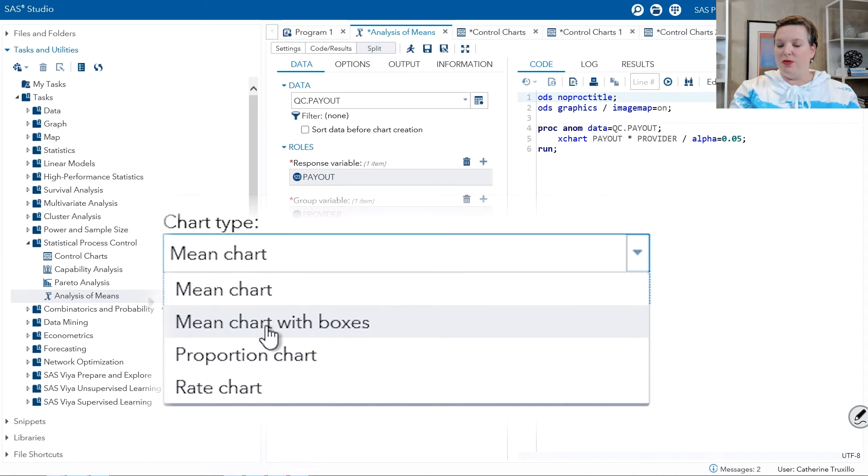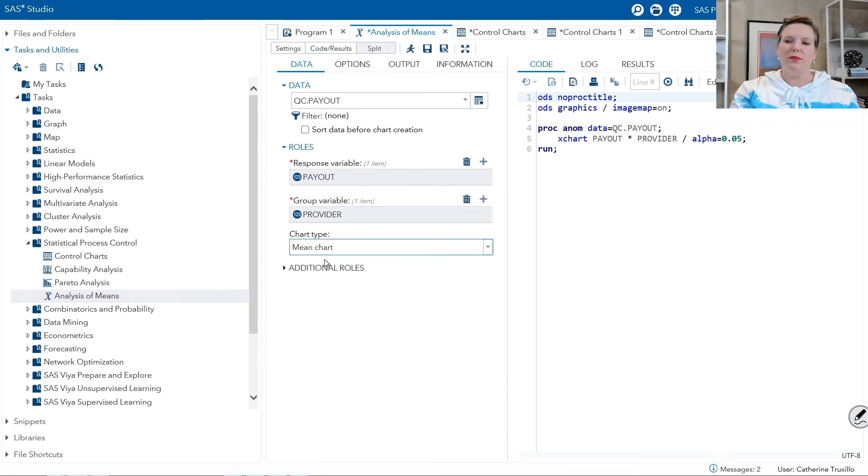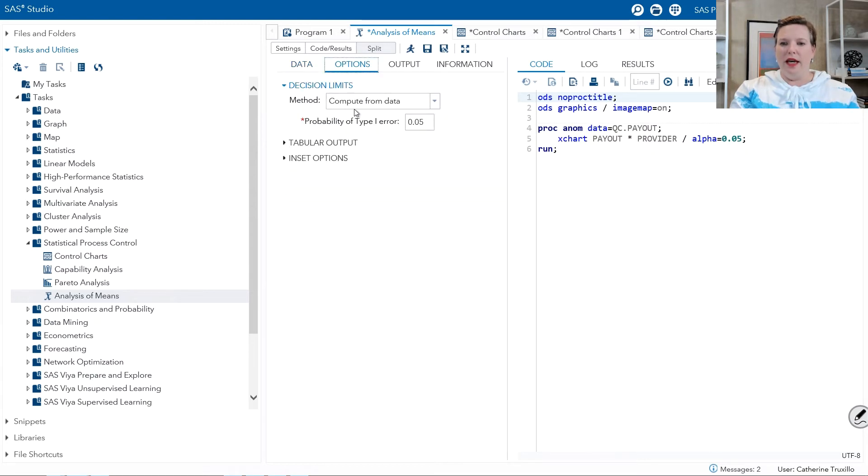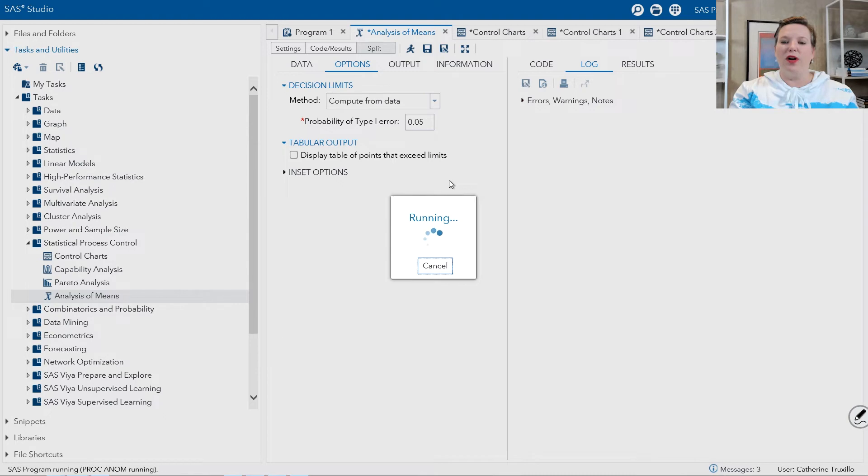I'm going to leave this on mean chart, and notice in the options, you can specify that you want to compute the limits from data, or you can use stored limits from a previous analysis. There's also the option of displaying a table of points that exceed your limits. We're going to go ahead and leave just the defaults, though. So, it's a very easy code to specify. You might want to change your alpha in some circumstances, but I'll go ahead and leave that at 0.05.